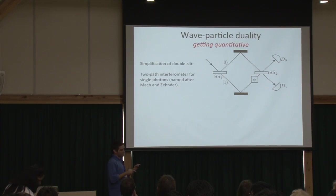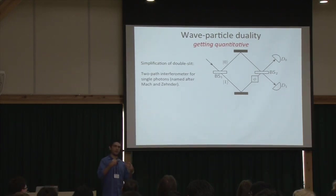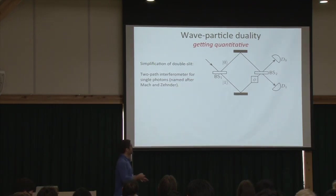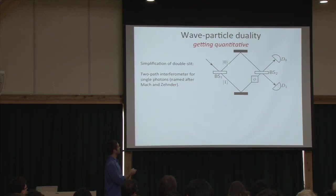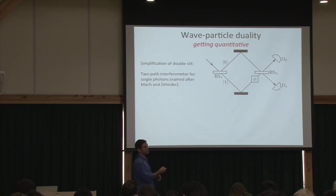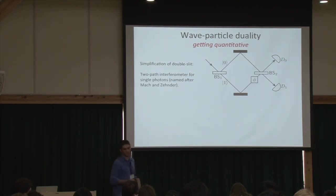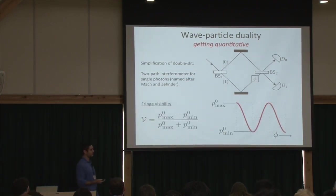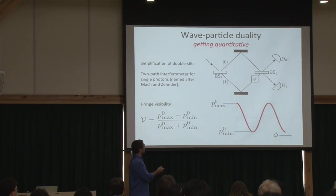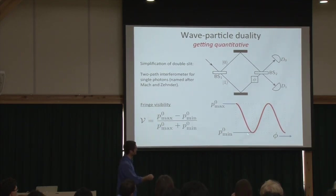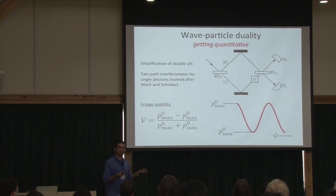To get more quantitative, let's consider a simpler interferometer: the Mach-Zehnder interferometer for single photons. The photon impinges on a beam splitter, creating a superposition of path states 0 and 1. A phase φ is applied to the lower arm, they recombine on the second beam splitter, and then you measure whether detector d0 or d1 clicks. We define a measure of wave behavior — the visibility — as the amplitude of the interference fringes as φ is varied.